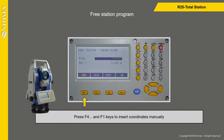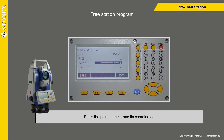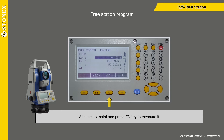Press F1 key to insert coordinates manually. Enter the point name and its coordinates, then press F4 key to save. Aim at the first point and press F3 key to measure it.